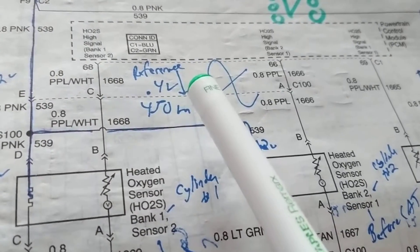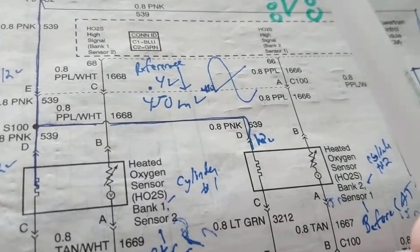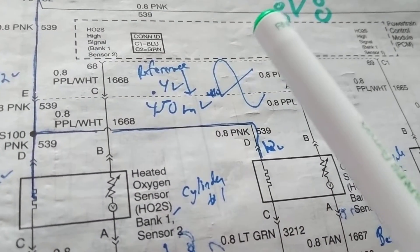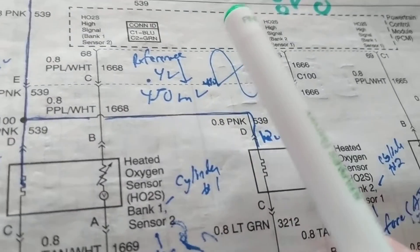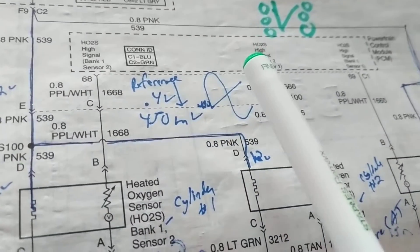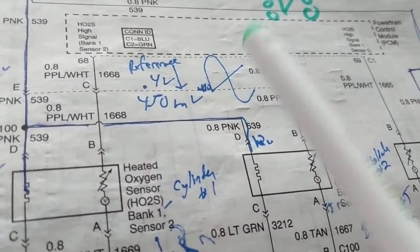Once you start up the key, we're in open loop. We only pay attention to the other sensors: the coolant temperature sensor, the intake air temperature sensor, mass airflow sensor, TPS sensor, and other temperatures that have to do with the air.